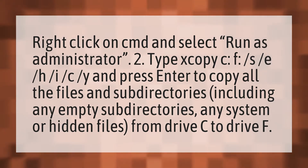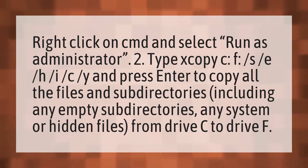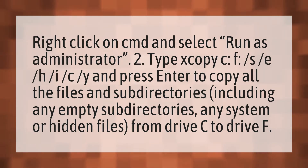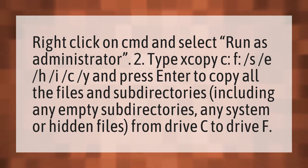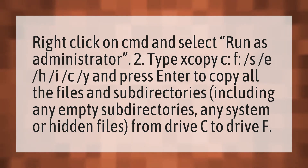Right-click on CMD and select Run as Administrator. Type xcopy C F /S /E /H /I /C /Y and press Enter to copy all the files and subdirectories, including any empty subdirectories, any system or hidden files, from drive C to drive F.